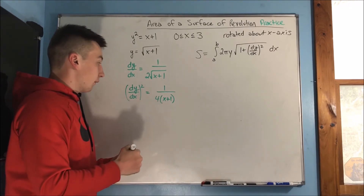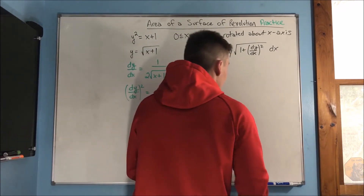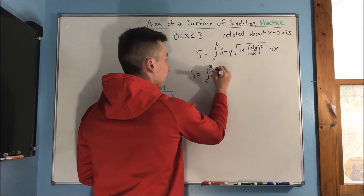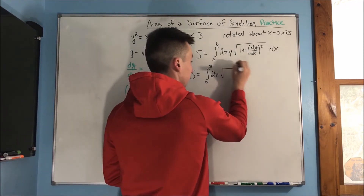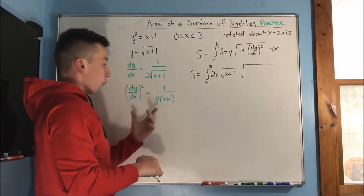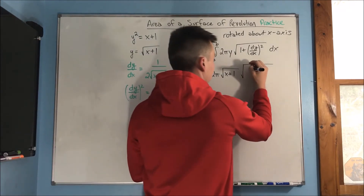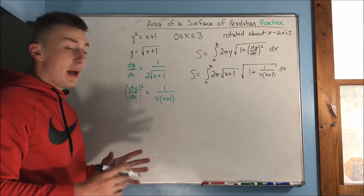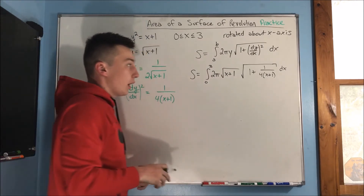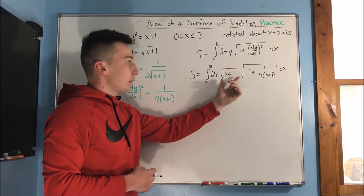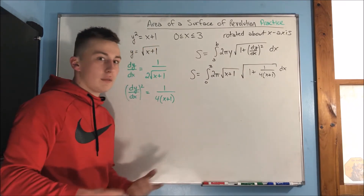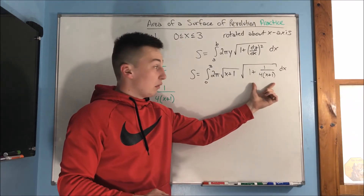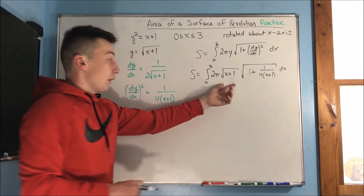So the surface area equals the integral from 0 to 3 of 2π times radical x plus 1, times the square root of 1 plus 1 over 4 times (x plus 1), dx. Take a step back and look at this: we have radical x plus 1 for y. If we get common denominators inside the radical, maybe we can cancel out that x plus 1. Getting common denominators, we would have 4 times (x plus 1) on the bottom, giving us [4(x+1) + 1] all over 4(x+1) inside the radical.